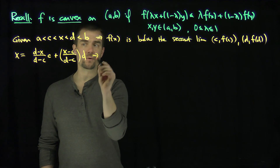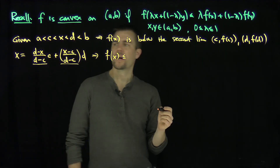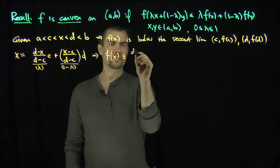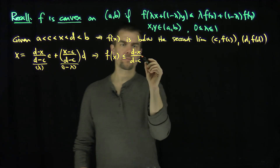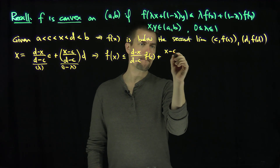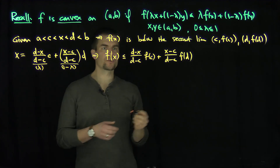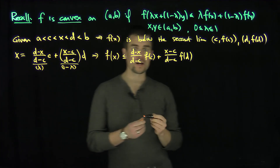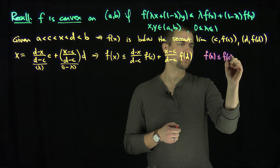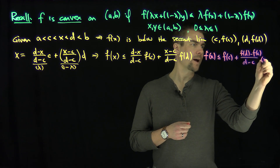Now I can use convexity. Here (d−x)/(d−c) plays the role of λ and (x−c)/(d−c) is (1−λ). So f(x) is less than or equal to (d−x)/(d−c)·f(c) + (x−c)/(d−c)·f(d). After gathering terms, my goal is to show that f(x) ≤ f(c) + [f(d)−f(c)]/(d−c) · (x−c). That's my goal.